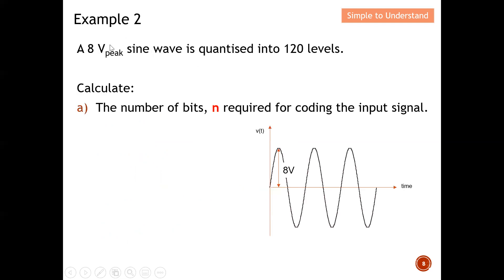Let's do a quick example. An 8-volt peak sine wave is quantized into 120 levels. The first task is to calculate the number of bits needed to decode the input signal. The sine wave is 8 volts peak, so from peak to peak is 16 volts — the total voltage full swing is 16 volts. We are given that the number of quantization levels is 120.